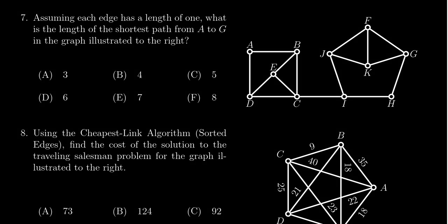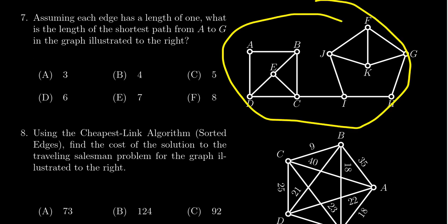In this video we provide the solution to question number seven for practice exam number one for Math 1030. Given the graph we see right here, we need to find the shortest path between vertices A and G. So let's think about that for a second. You have A right here, we have G right here.